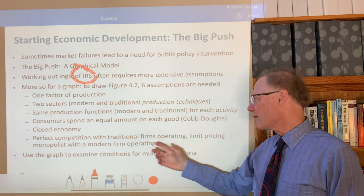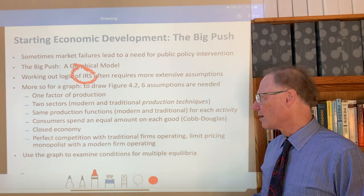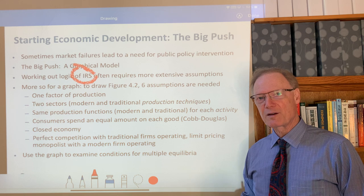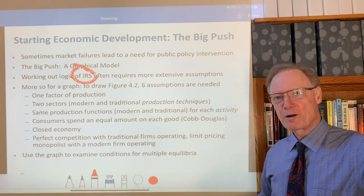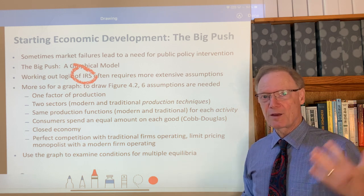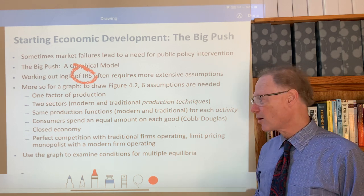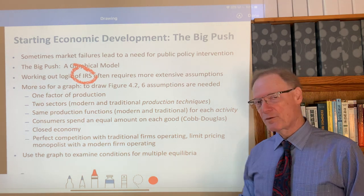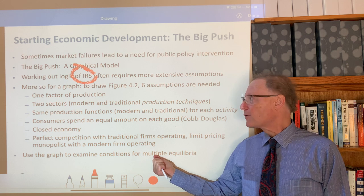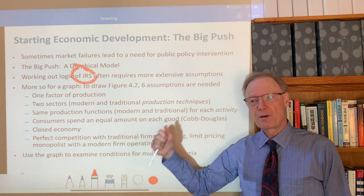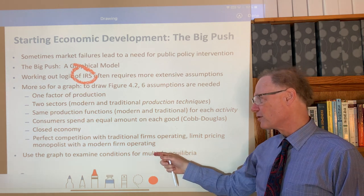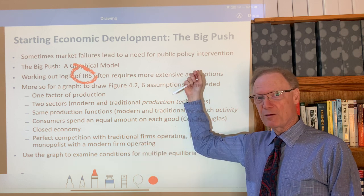We have a closed economy in this assumption. We also importantly make a couple of industrial organization assumptions. First, within the cottage production activity — such as the sandals activity — there's perfect competition. The idea is that if there's more money to be made producing sandals at home than doing something else, more people will switch. That notion of free entry and free exit underlies the competitive market assumed for cottage industry. If on the other hand we have a modern firm using the modern sector production technique, we have assumed there's a monopolist, first of all because we have increasing returns to scale throughout.